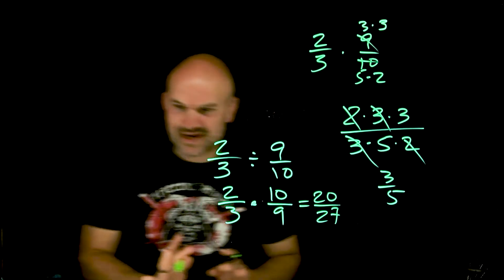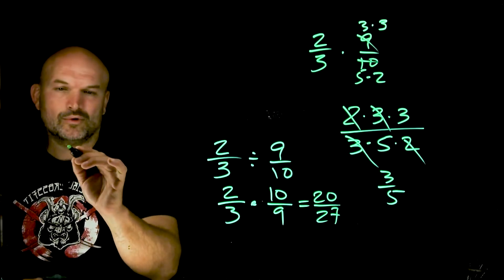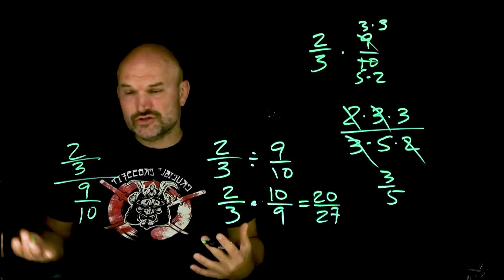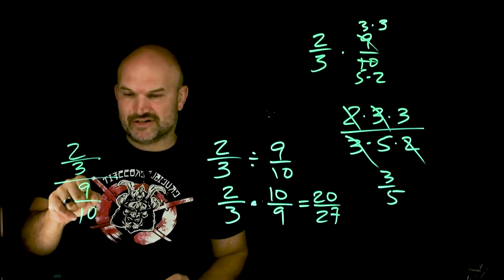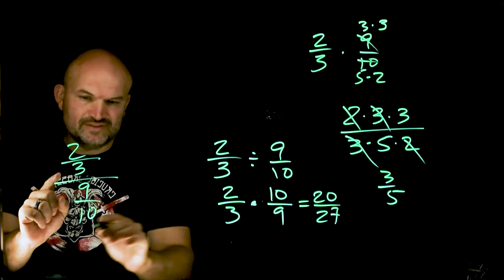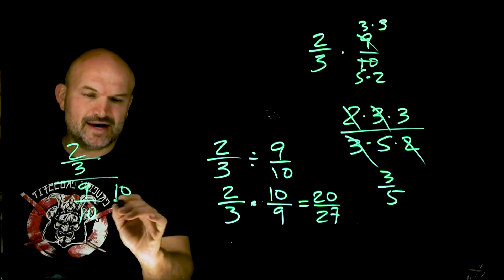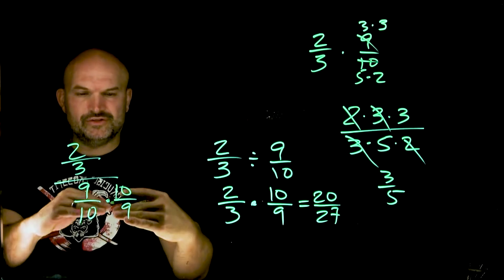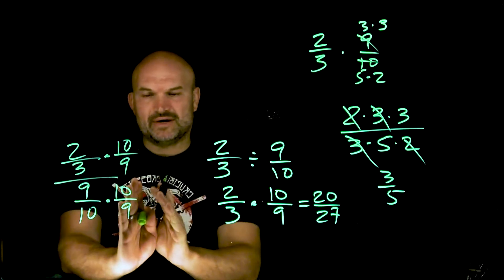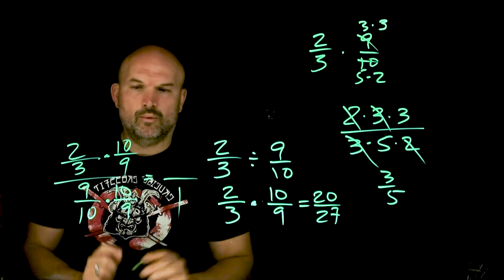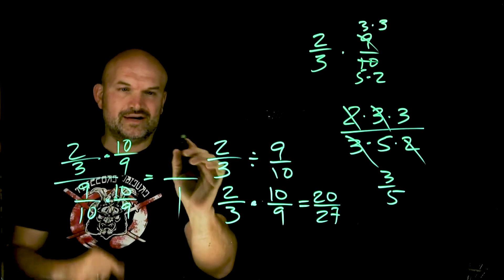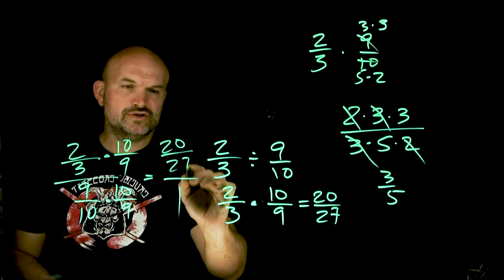Let me explain why we keep-change-flip. If I have two-thirds divided by nine-tenths, we don't want to divide by a fraction — we want to divide by one, because anything divided by one is itself. To get rid of the fraction in the denominator, I multiply by its reciprocal. Whatever you do in the denominator, you must do in the numerator to keep equivalent fractions. Any fraction multiplied by its reciprocal equals one, which gives us exactly the same result: 20 over 27.